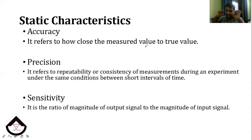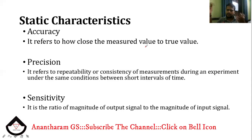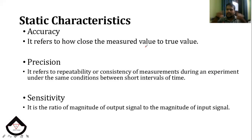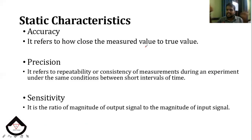Precision refers to the repeatability or consistency of measurements during an experiment. For example, if we measure the diameter of a wire using a screw gauge multiple times under the same conditions and at the same point, and all the observations give the same value — a straight-line graph — then the measurement is more and more precise. That is precision.